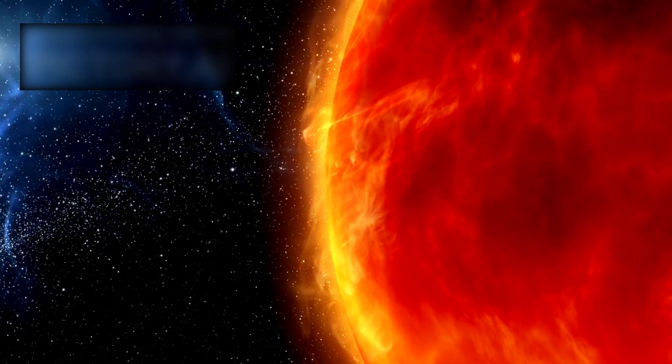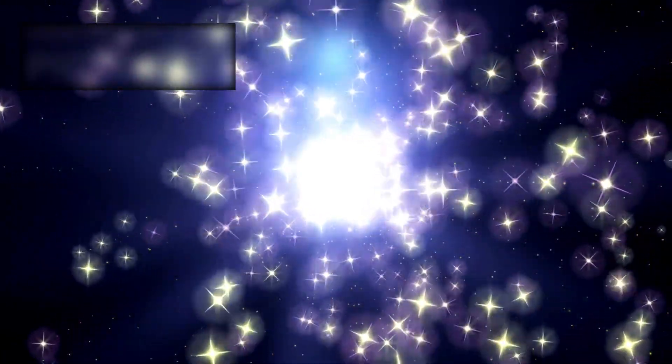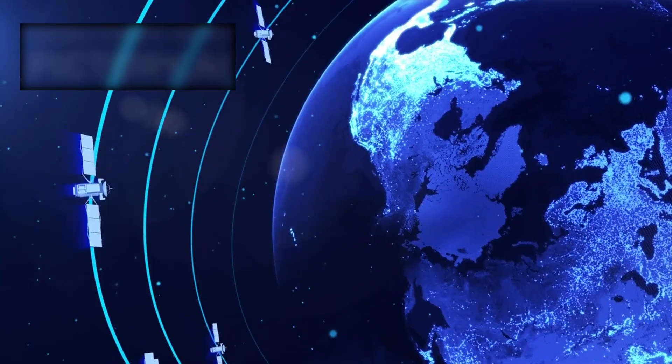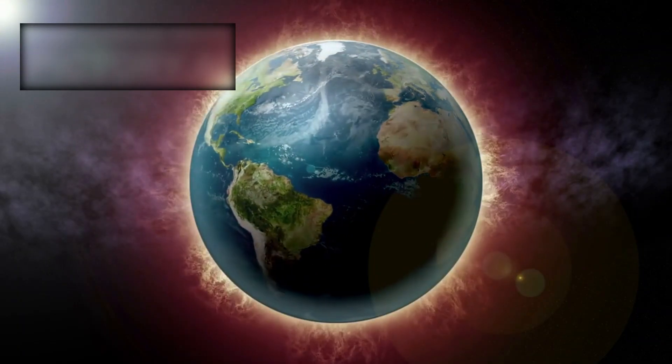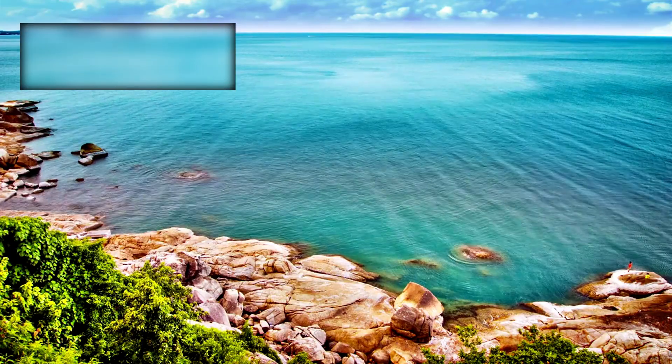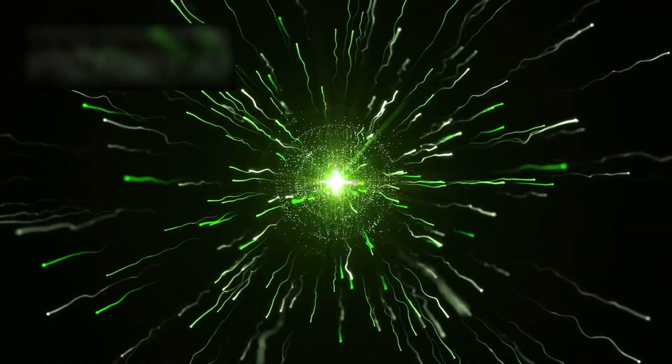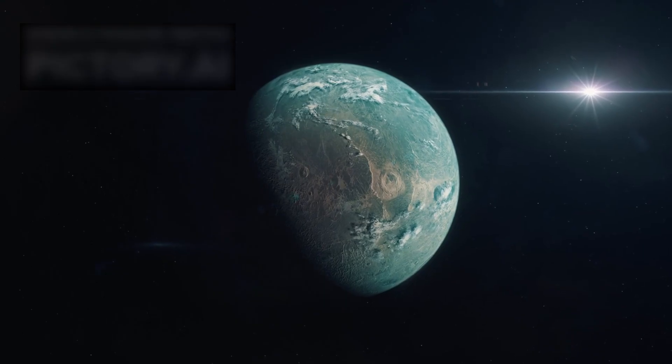It orbits a faint red dwarf star, K-218, a sun far smaller, dimmer, and cooler than our own. The planet circles dangerously close, just 0.18 AU away. For comparison, Earth orbits at one. If our world were placed so near, our oceans would vanish in boiling vapor. But K-218b endures. Its star's dimness balances the closeness, allowing the planet to remain in the habitable zone, the fragile region where liquid water might exist.